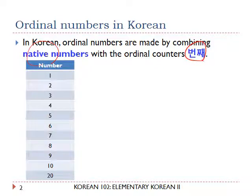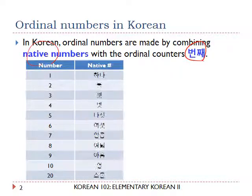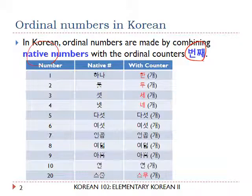Let us look at the table. There are numbers from 1 to 10 and 20. This is the native number form, and this is the form when they are followed by the counter. Note that the first four numbers and the number 20 change form when they are followed by the counter.